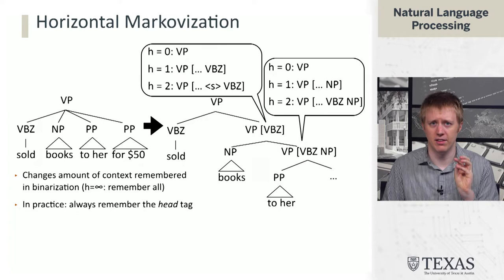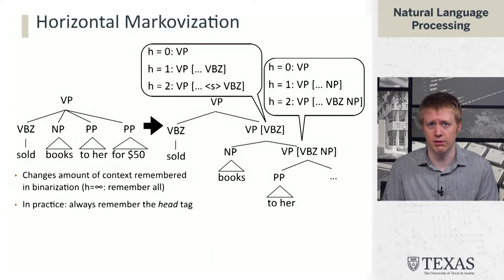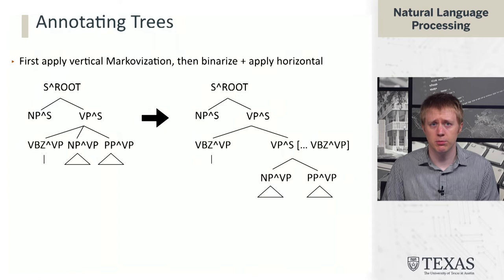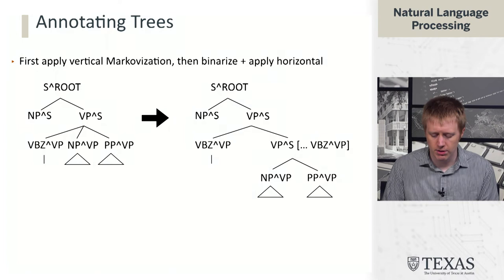In practice, there are implementation details: you always remember the head tag — meaning the tag that's a verb in this case, so you always remember the VBZ. This gives you a way, similar to vertical Markovization which controlled the amount of context we paid attention to, of also controlling the amount of context when dealing with these high-arity rules. Typically when preprocessing a tree bank, we first apply vertical Markovization and then apply horizontal Markovization. We can form fairly complicated structures and symbols this way, but we only see a small fraction of the total possible symbols. So even though theoretically this is an exponential blowup in grammar size, in practice it blows it up by a good factor but doesn't get too out of control.